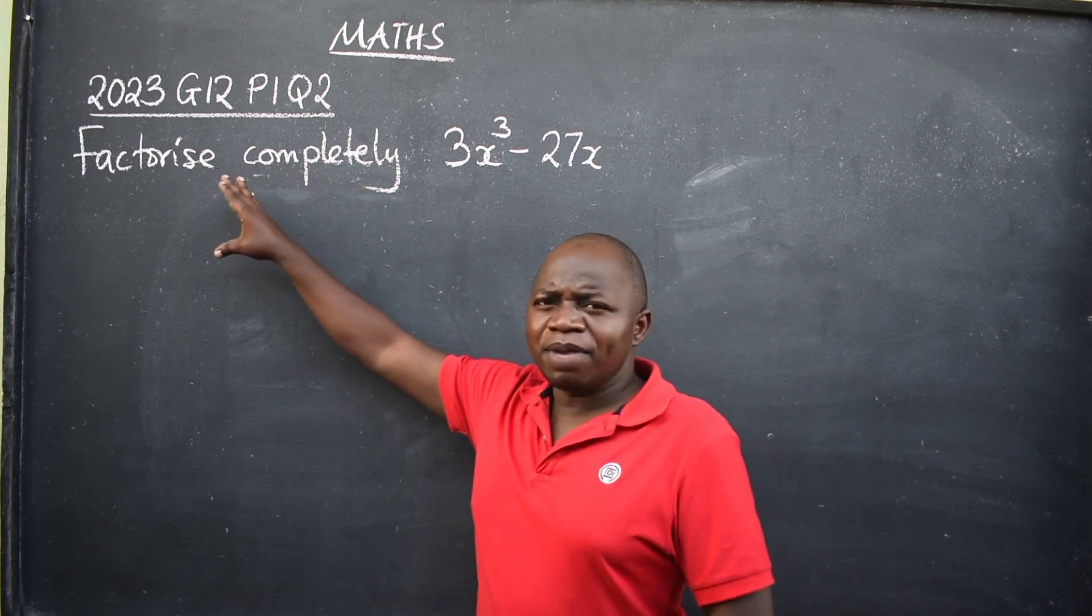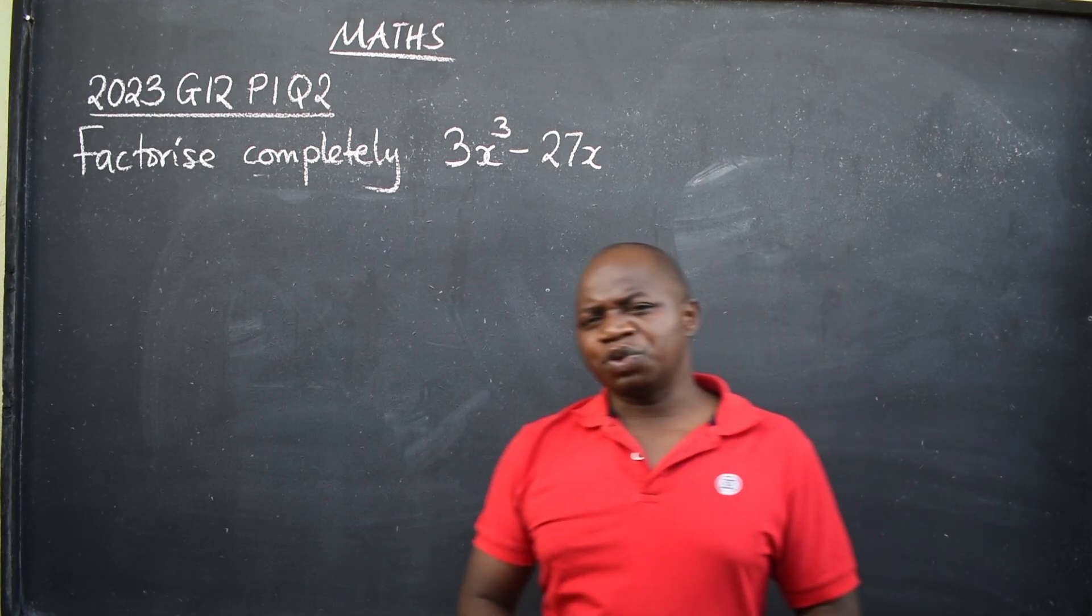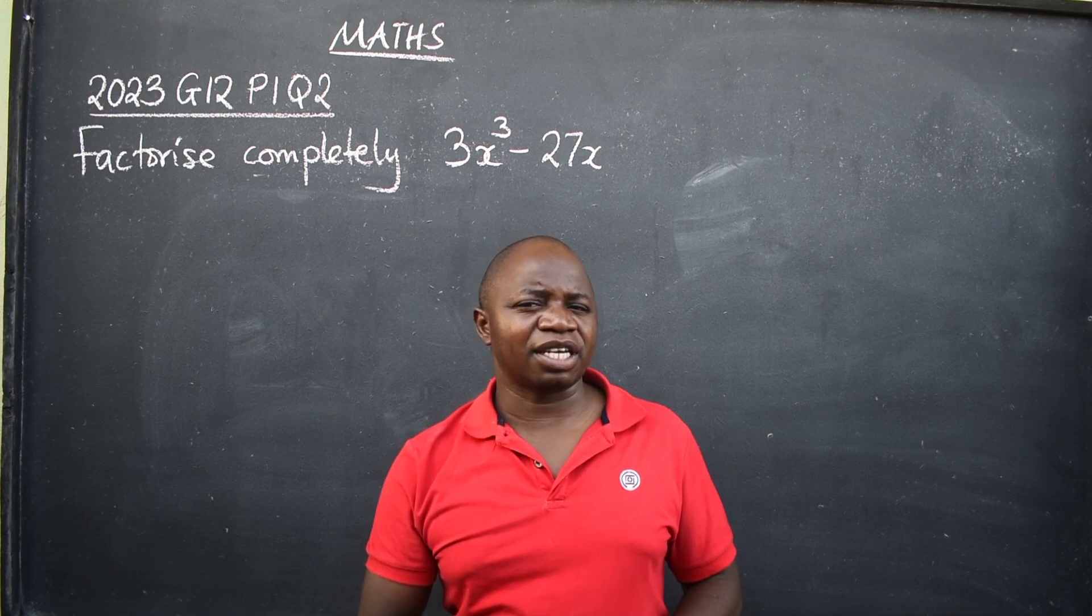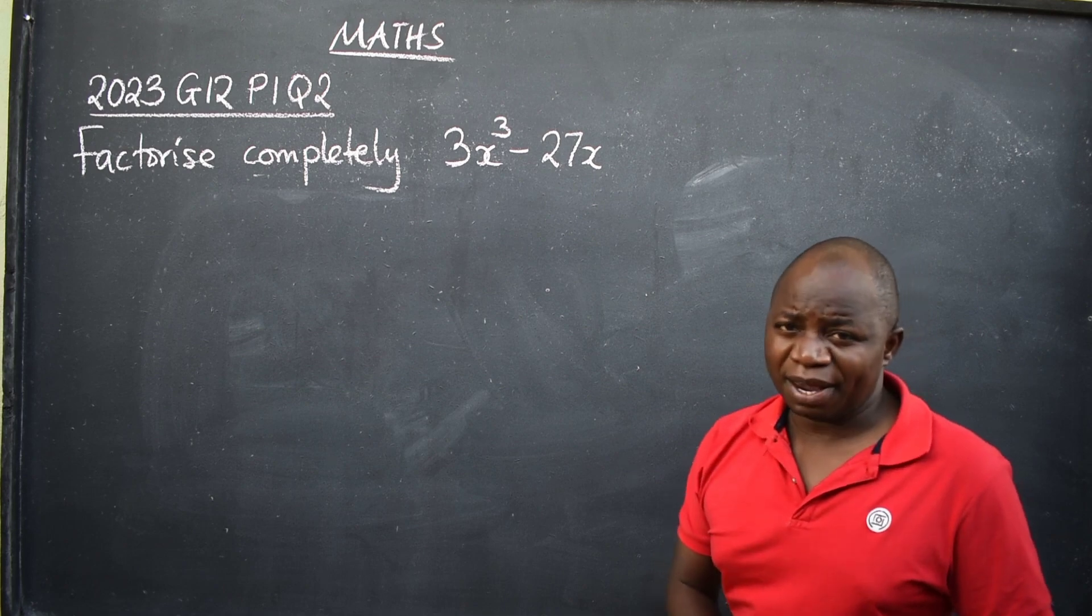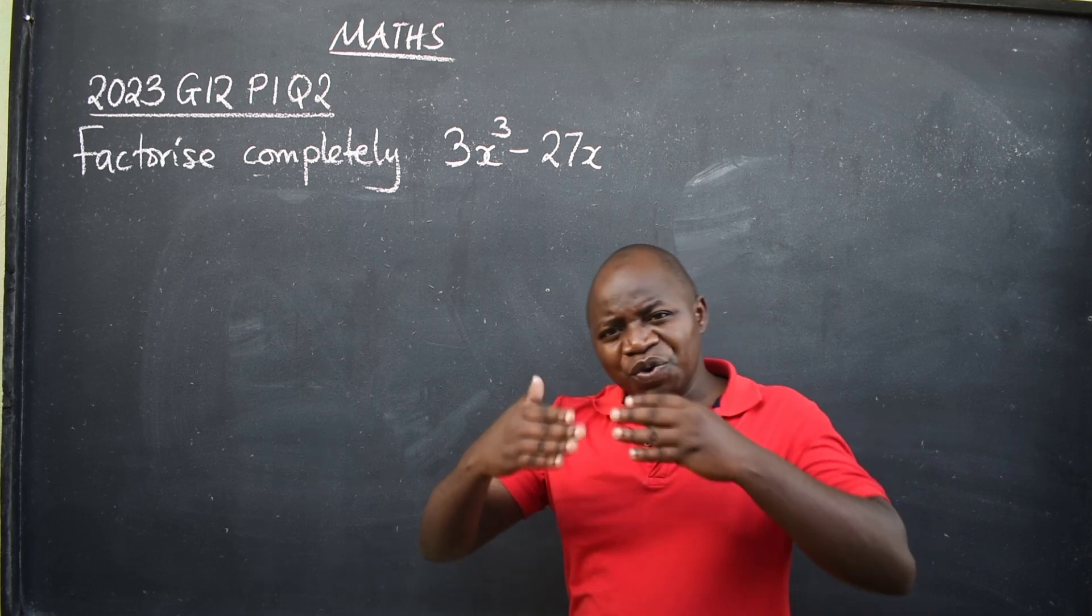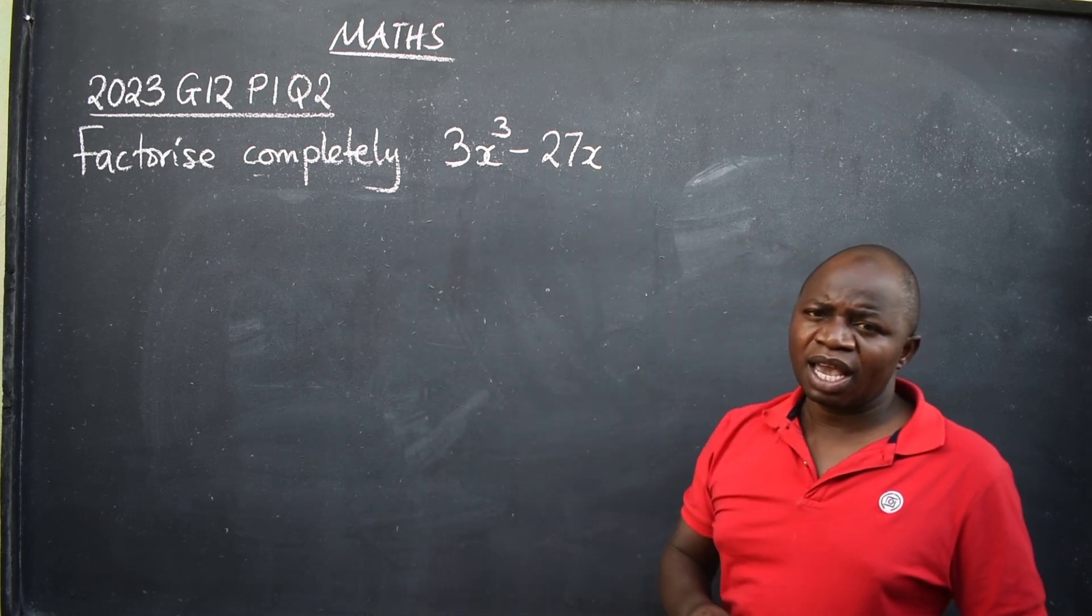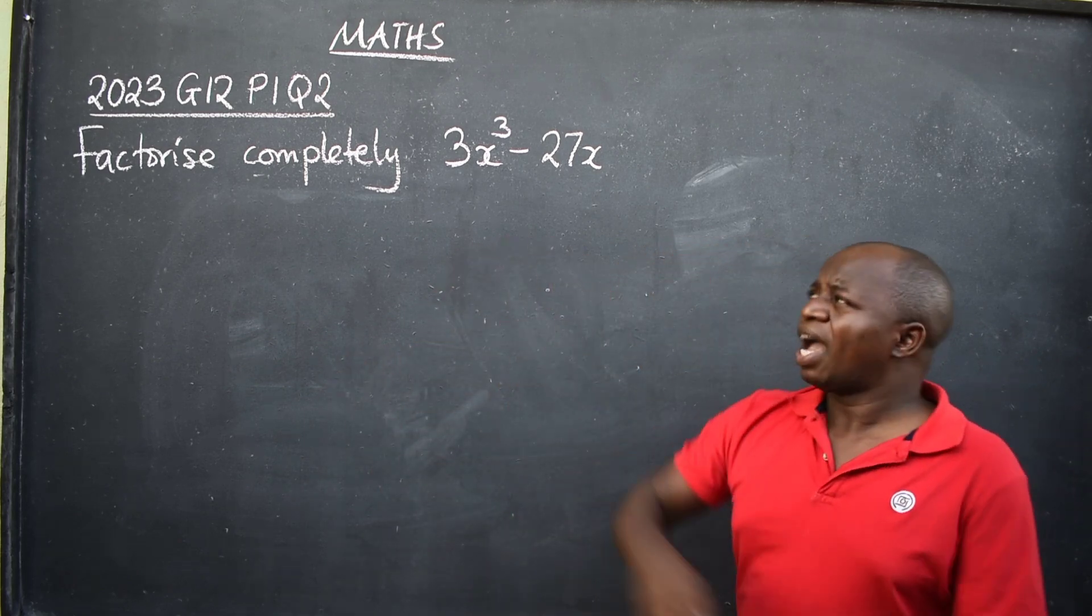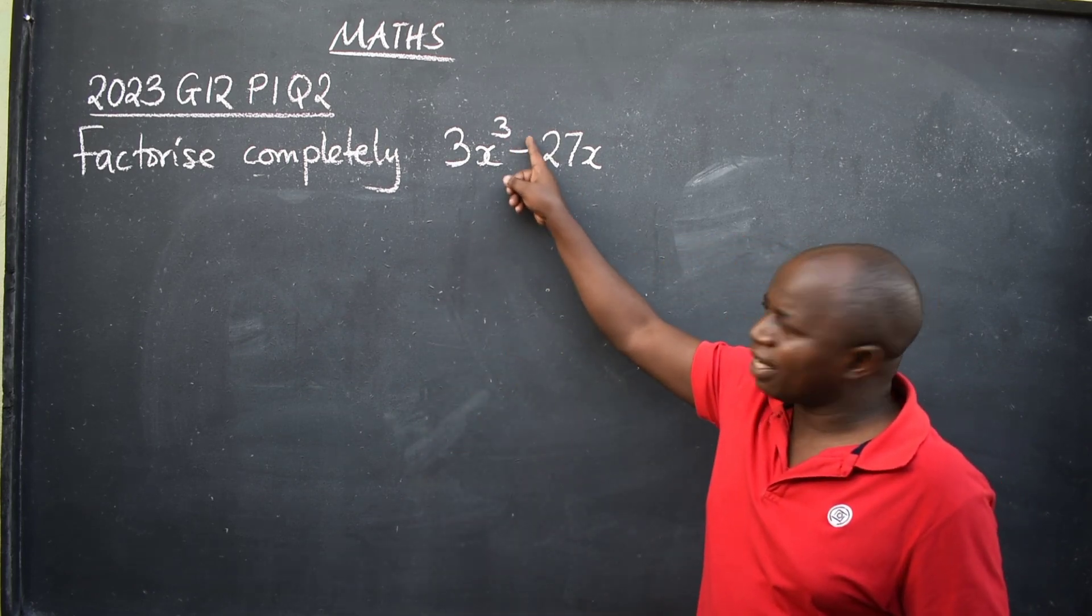This is algebra under the subtopic factorization. When you are told to factorize a given expression, you need to identify the type of factorization you're dealing with. Look at what we've been given here: two terms. When you are given two terms, they can be fractions or decimals, as long as there are two terms.